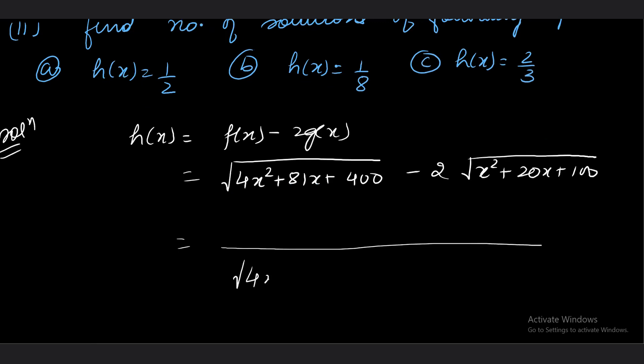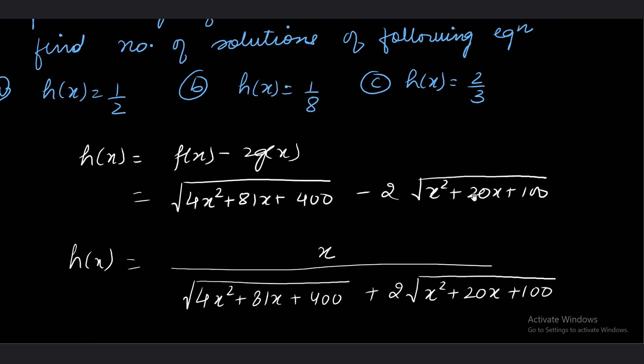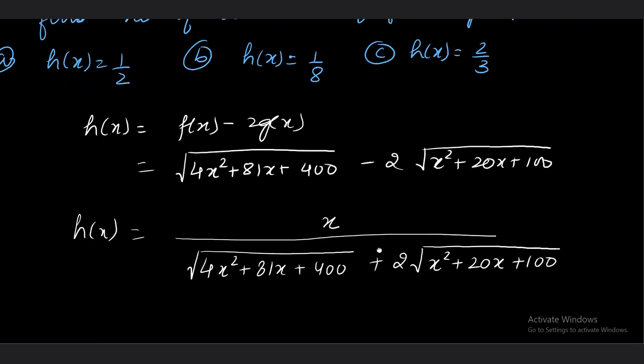After rationalization, the denominator is root over 4x square plus 81x plus 400, plus 2 root over x square plus 20x plus 100. What about the numerator? 4x square got cancelled. 81x and 80x will get cancelled, so one x remains. And all the constant terms got cancelled. So here is the function h(x) that we have. Now what do you say about this function?